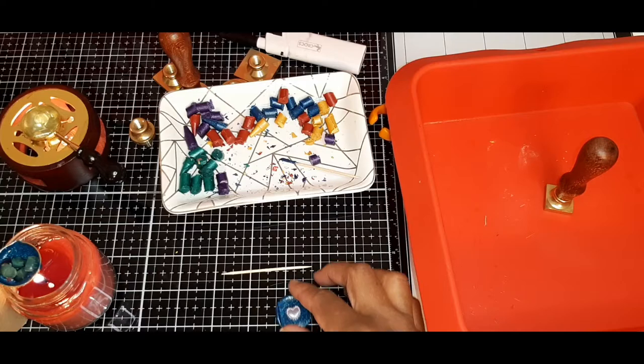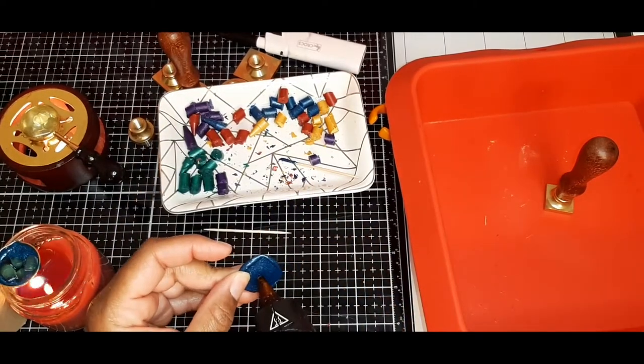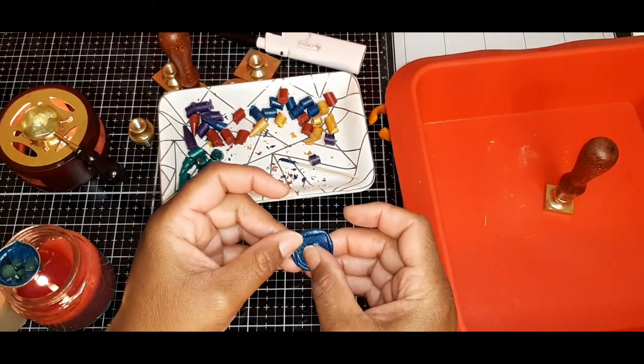So here I found some bead and coat flatbacks from Hobby Lobby that I am just putting on the wax seal to embellish. And I think it turned out really cute.